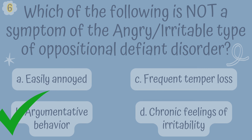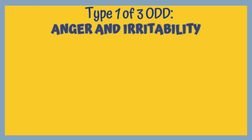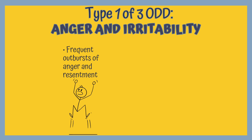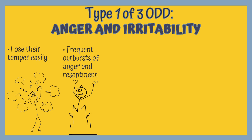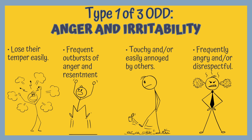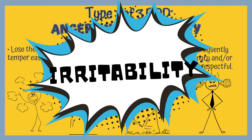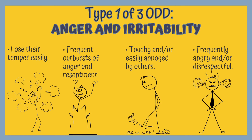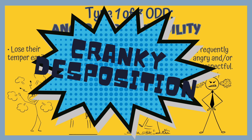The correct answer is B, Argumentative behavior. The angry, irritable type of ODD focuses on children who frequently exhibit irritability, anger, and a tendency to lose their temper. These children often find themselves in a state of chronic irritability where even small annoyances can set them off. The hallmark features are irritability, temper loss, and a generally cranky disposition.